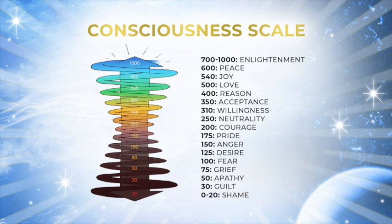The frequency of 250 is neutrality; 310 is willingness; 350 is acceptance; 400 is reason — a very analytical frequency. The frequency of 500 is love; 540 is joy; 600 is peace. The frequency of enlightenment begins at 700 and goes all the way to 1,000. The frequency of 1,000 represents what we would call a fully embodied being.